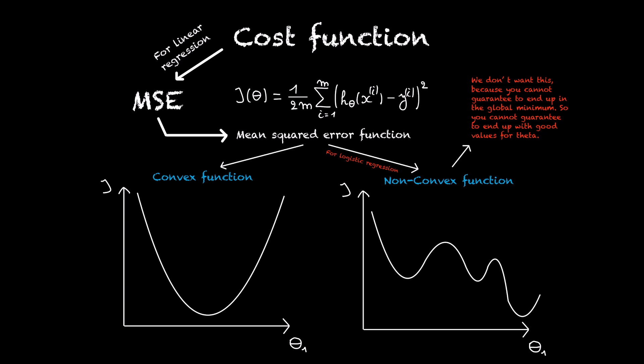So to make the story short, we need a different cost function. One that is convex for our current hypothesis. This way we are sure we end up in a global minimum if we run an algorithm like gradient descent, which is used to minimize this cost function.